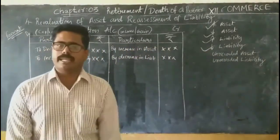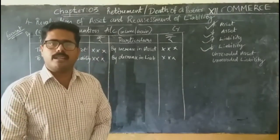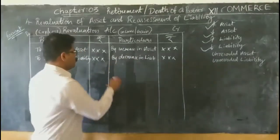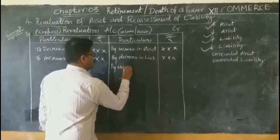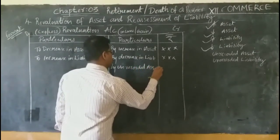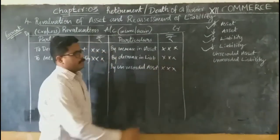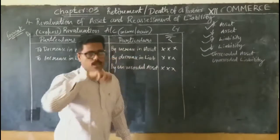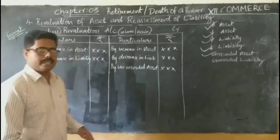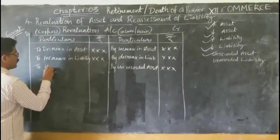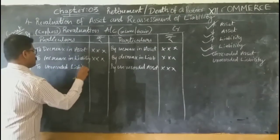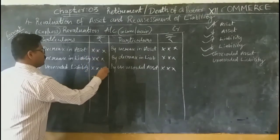The next case is unrecorded assets. If there are unrecorded assets in the organization, they are a gain, so they will be credited — recorded as 'by unrecorded asset'. And for unrecorded liabilities, they are a loss to the organization, so they will be debited — recorded as 'to unrecorded liability'.